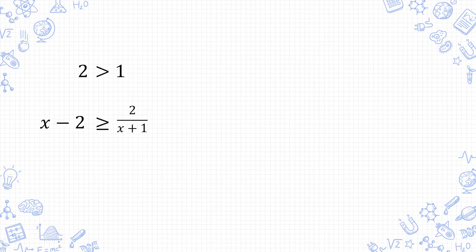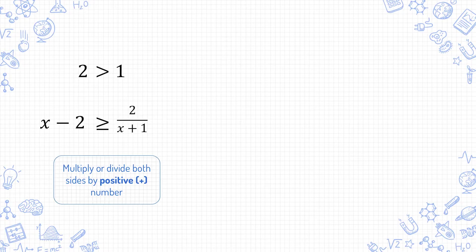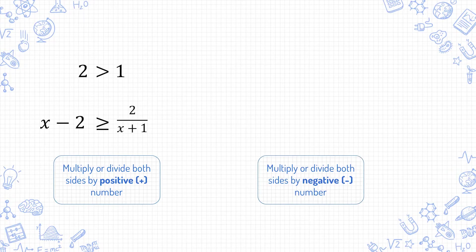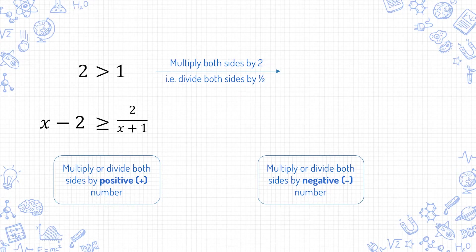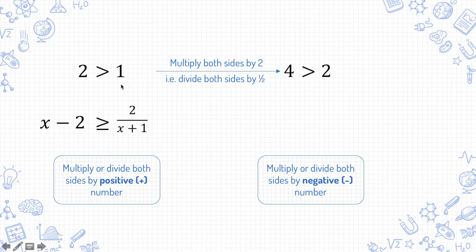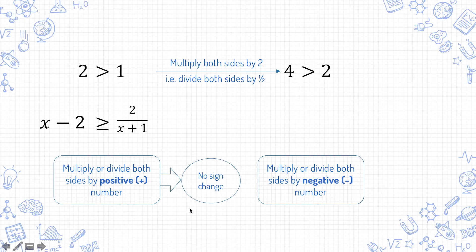Some basic properties of inequalities to take note of. What happens if you multiply or divide both sides by a positive number? Let's say you multiply both sides by 2, which is equivalent to dividing both sides by half. 2 times 2 is 4, 1 times 2 is 2. You know that 4 is greater than 2. So from this example, you can see that multiplying both sides of an inequality by a positive number, the sign remains the same — there is no sign change.